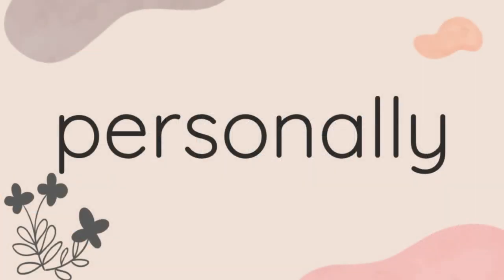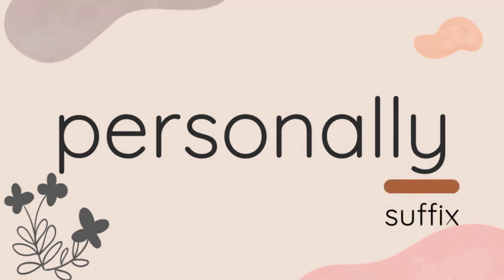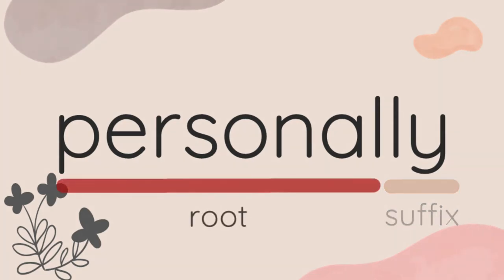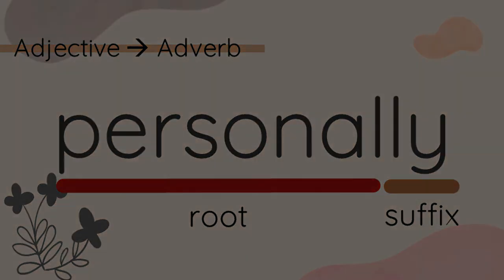Let's pick another word as an example. This time, I would like to choose the word 'personally'. Let's break it down. The root of this word is 'personal', then the suffix 'ly' is added. We have 'personal' as the root and 'ly' as the suffix. Just like the previous example, the word class also changed — if previously 'personal' stood alone as an adjective, after the suffix 'ly' is added, it becomes an adverb.